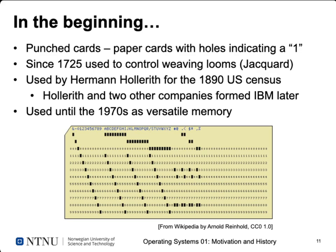Punch cards were invented as early as 1725, first used to control weaving looms — encoding patterns for fabric. They were also used in the 19th century for automated data processing: Hermann Hollerith used them for the 1890 US census and later ones. Hollerith's company and two others merged to form IBM. Punch cards remained in use until the 1970s — they were cheap and versatile, though limited in storage capacity.